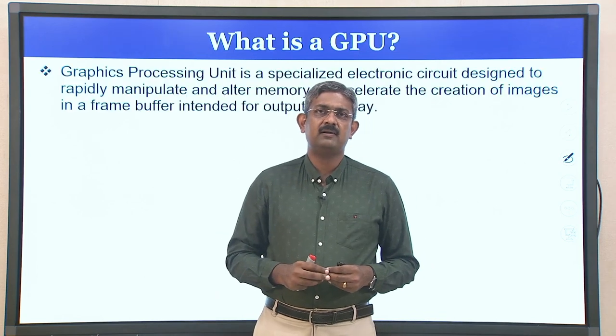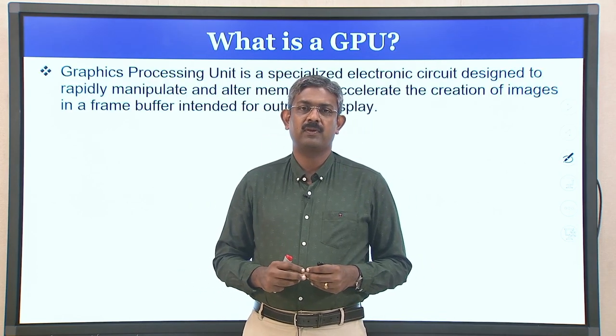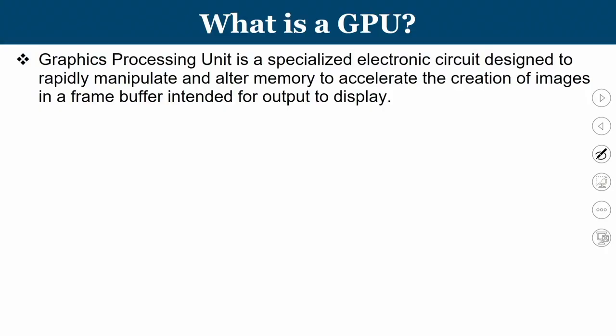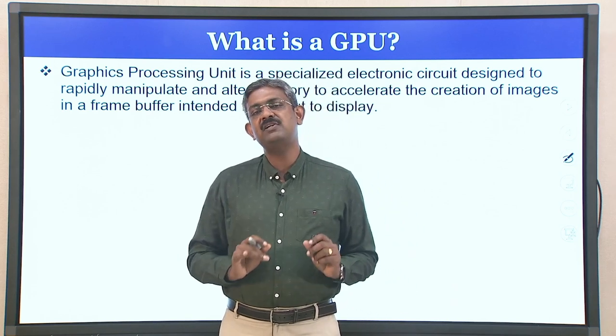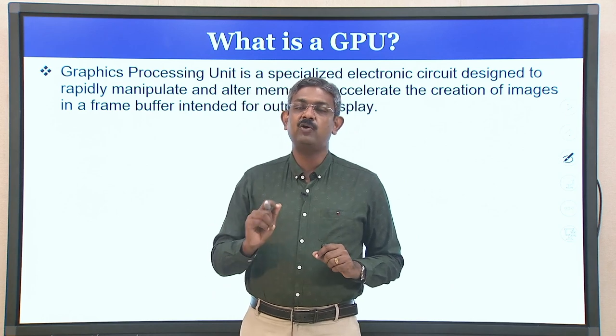Let us try to understand what a GPU is. A graphics processing unit is a specialized electronic circuit designed to rapidly manipulate and alter memory to accelerate the creation of images in a frame buffer intended for output to display. What we understand from this context is we need some kind of specialized hardware unit, wherein you have an application where a lot of images need to be processed and a lot of values need to be sent out to the screen for display. The architectural features of a conventional CPU may not be sufficient to handle this operation.